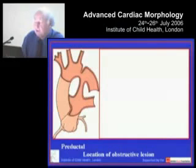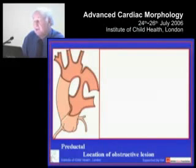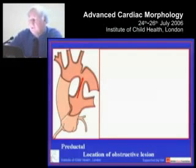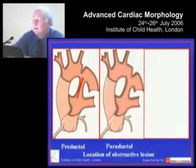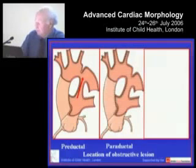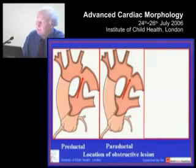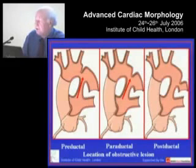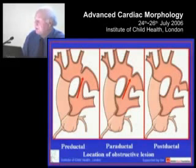The obstructive lesion can vary in its relationship to the mouth of the arterial duct. We describe this either as pre-ductal, when the major flow pathway through the arterial duct is to the descending aorta; paraductal, when the obstructive lesion — usually a waist lesion — is opposite to the mouth of the open duct; or post-ductal, when the flow pathway is from the patent arterial duct to the isthmus of the aorta.